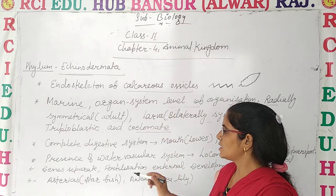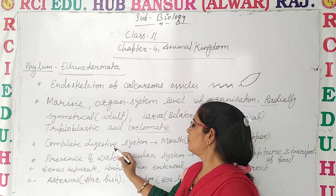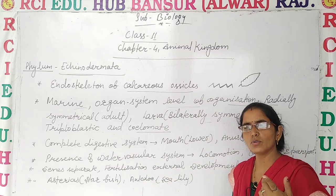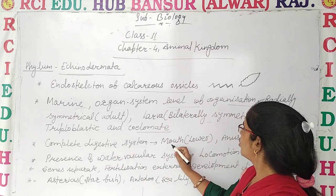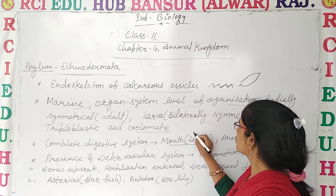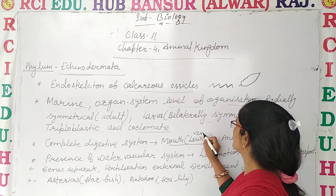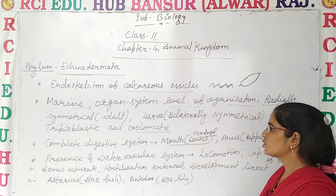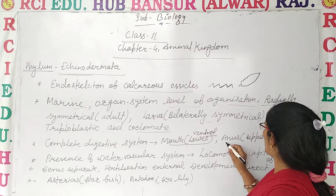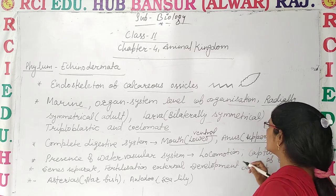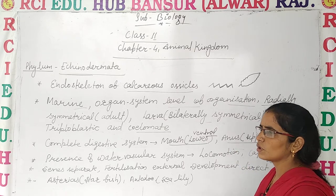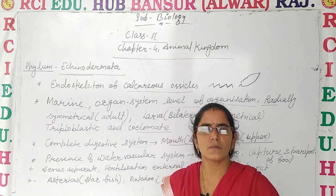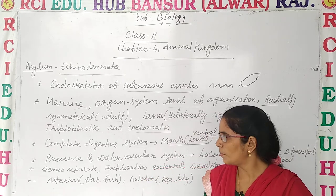The digestive system is complete. Complete means there are two openings — one mouth and one anus. The mouth is present on the ventral surface (lower part) and the anus is on the dorsal surface (upper part). Both openings are present, so the digestive system is complete.